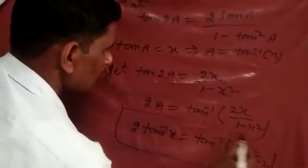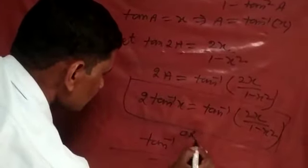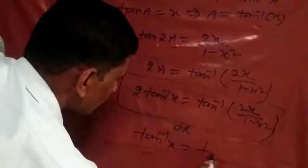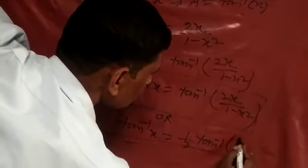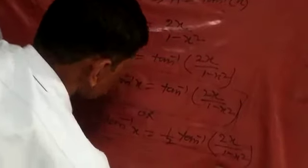This is the formula for 2 tan inverse x equals tan inverse 2x upon 1 minus x square.